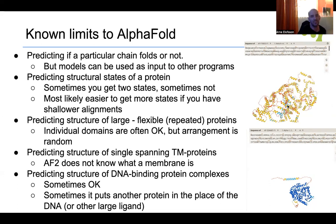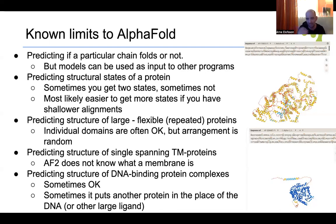For disordered proteins, there are no co-evolutionary signals, so AlphaFold2 will produce a globular model that probably doesn't reflect reality. It also doesn't know anything about the physics of membranes, so for transmembrane proteins it might place the transmembrane region incorrectly. It doesn't know whether a protein should be inside or outside the membrane. And sometimes it has problems with other bound molecules like DNA in large DNA-binding complexes — sometimes it works, sometimes it doesn't.